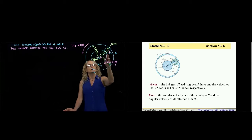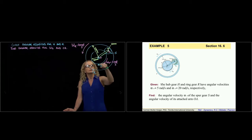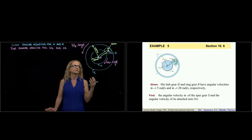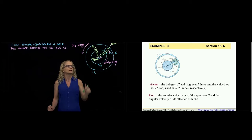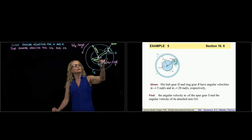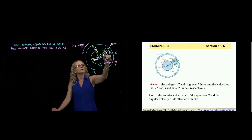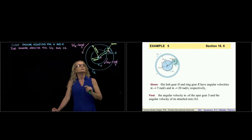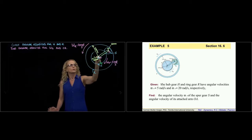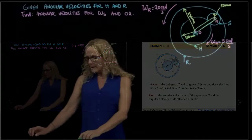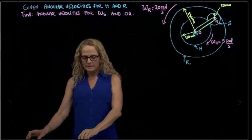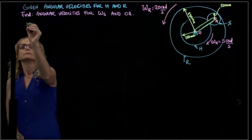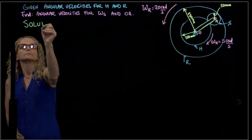We have two other gears: one called H, rotating in one direction, and one called S, for which we have to find the rotation. We need to find the angular velocity of gear S and the angular velocity of the bar connecting O to A. Everything is rotating about point O. What is the solution of this problem?